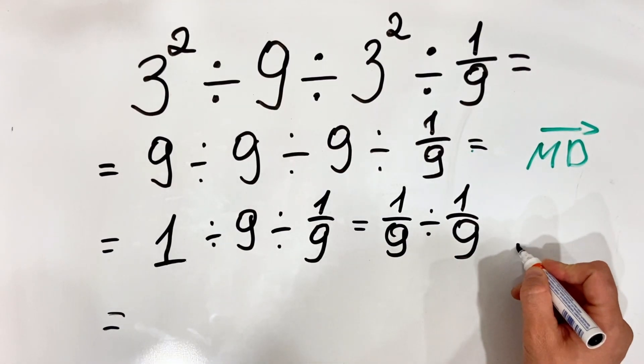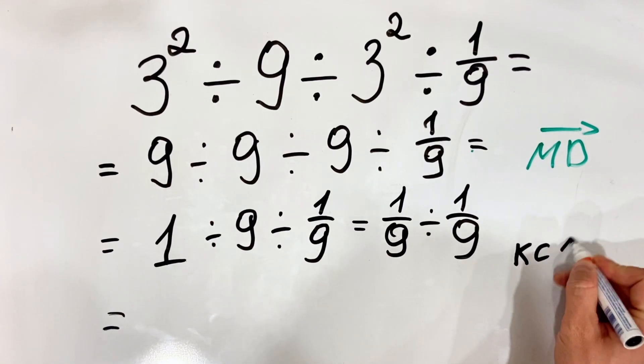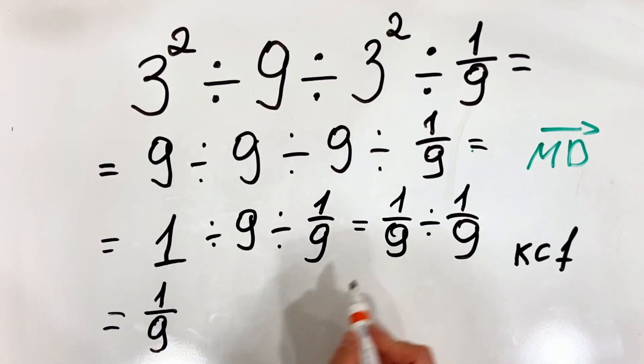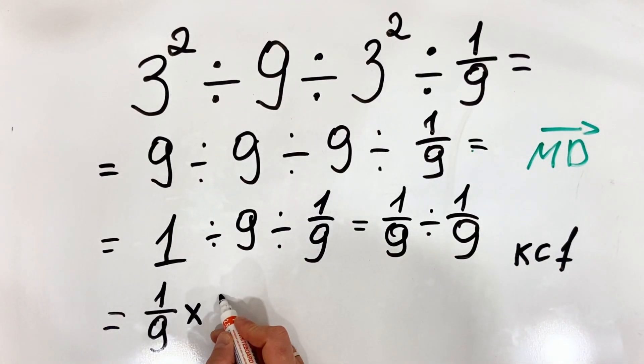Or you can remember the KCF rule, which means keep the first. So we're keeping the 1 ninth. Change the sign to multiplication and flip the second.